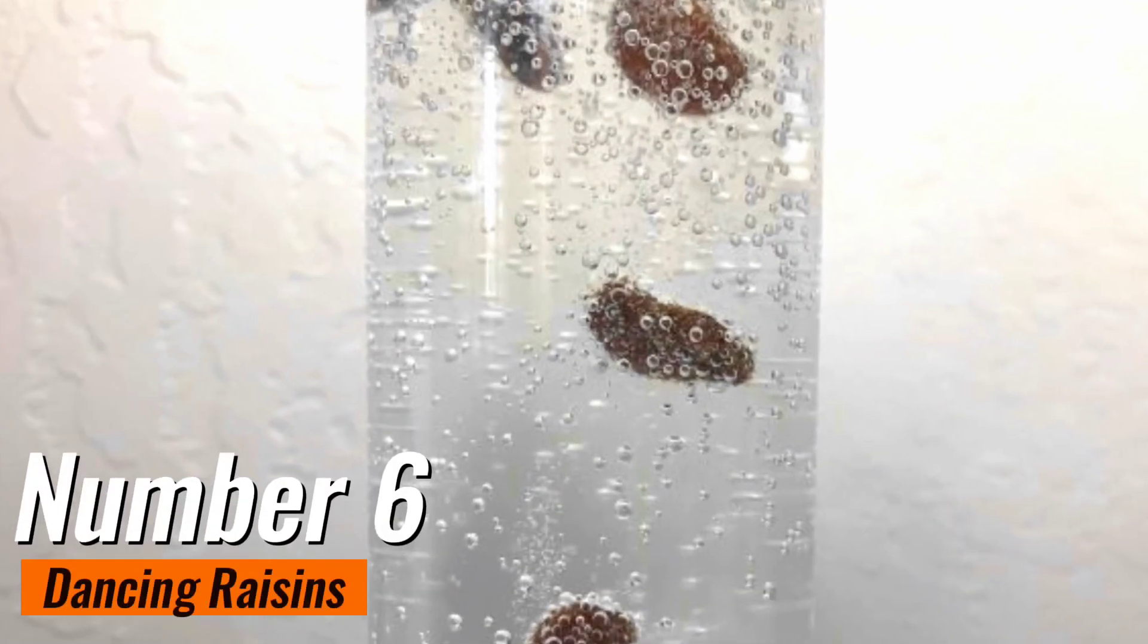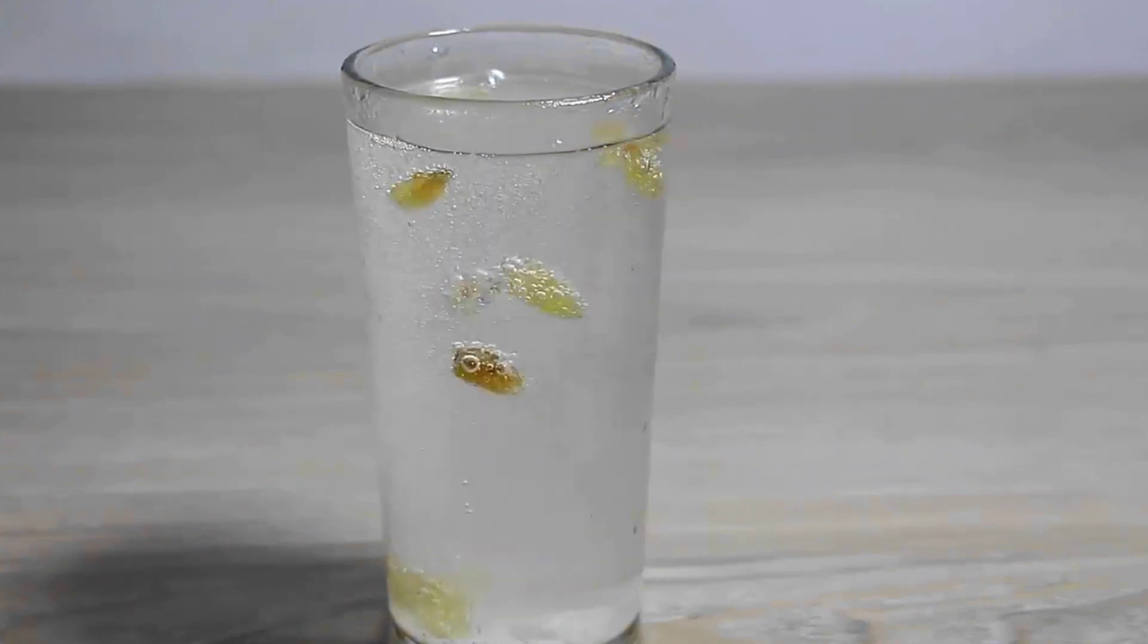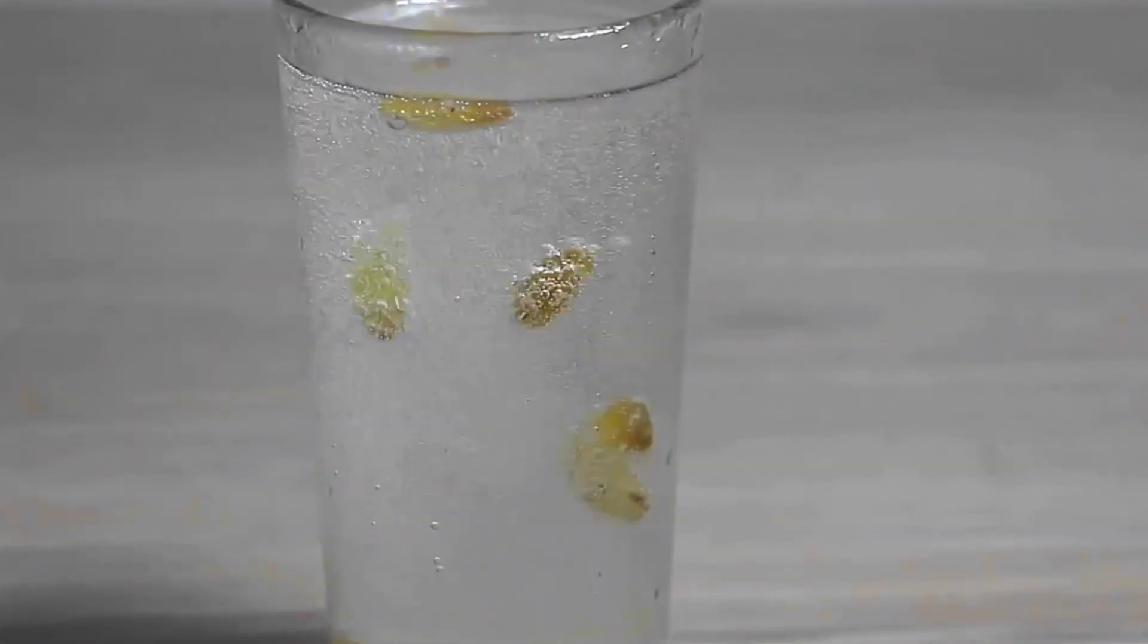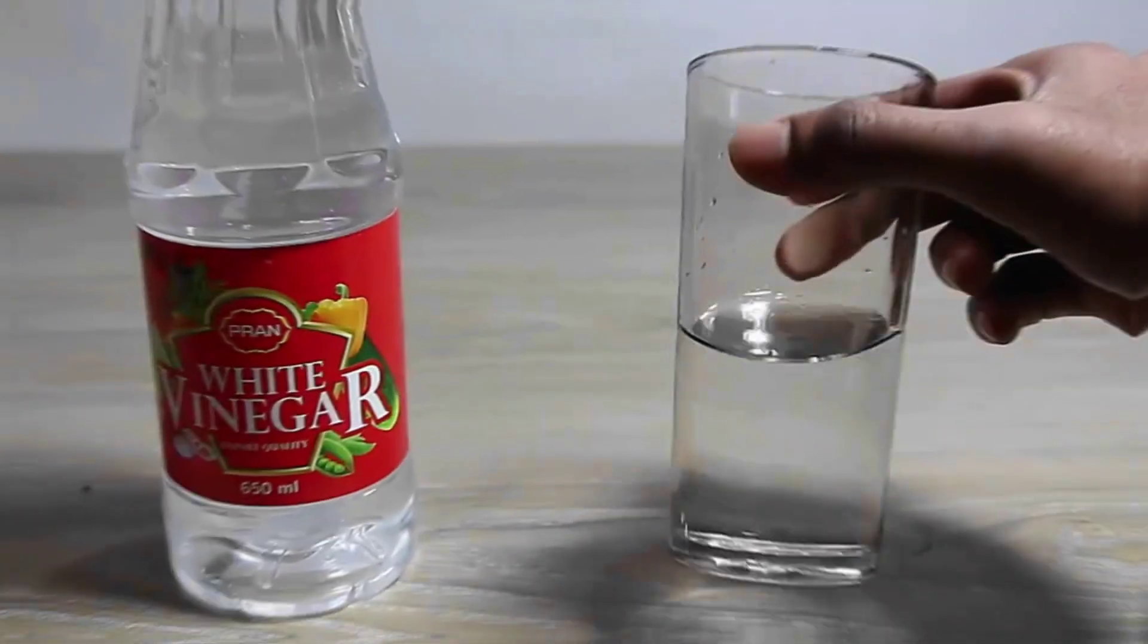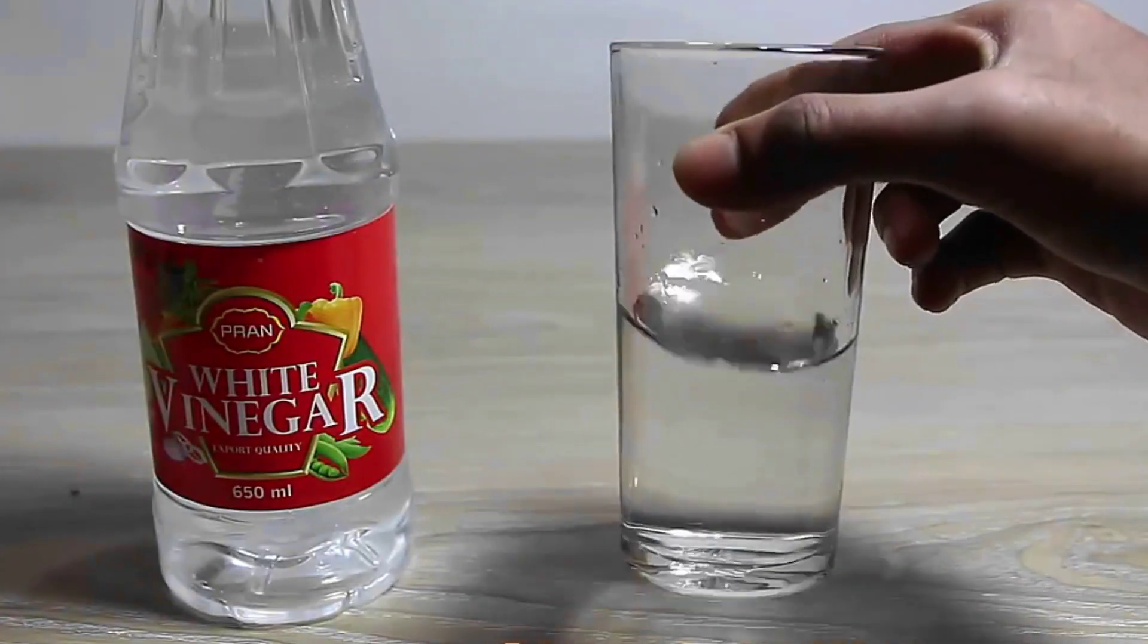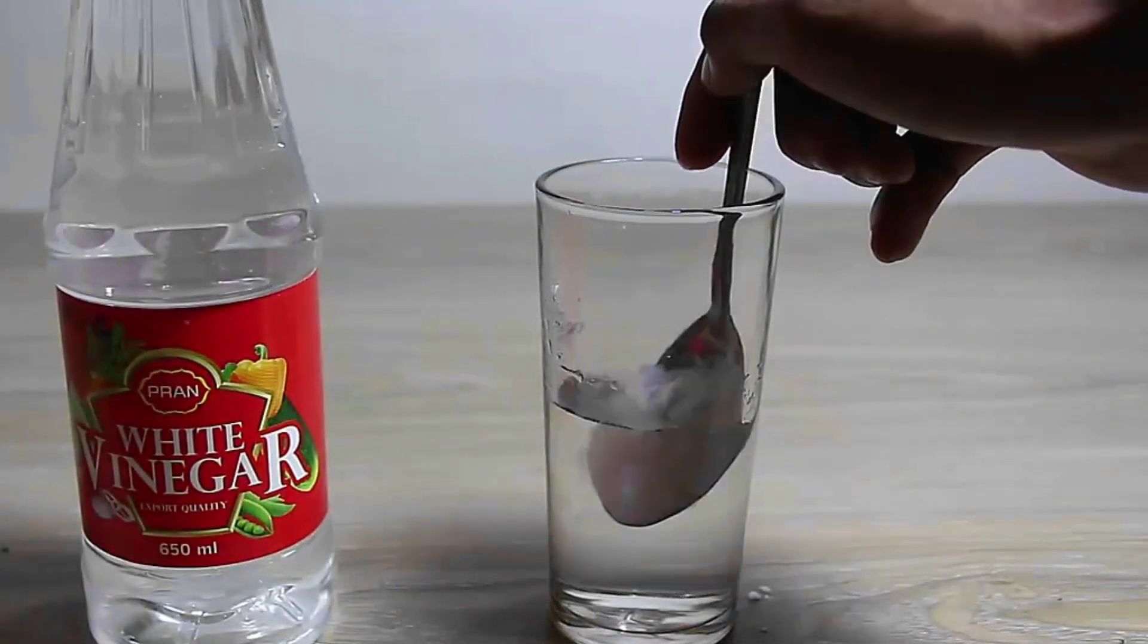Number 6. Dancing Raisins. The Dancing Raisins experiment is a mesmerizing and engaging science activity that explores the concept of density and buoyancy. To perform this experiment, you will need a clear glass or container, carbonated soda, such as lemon-lime soda, and raisins.